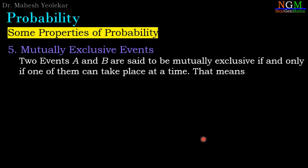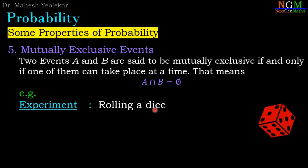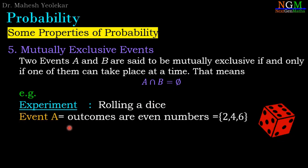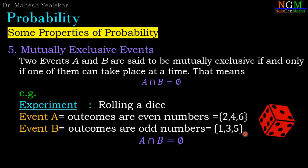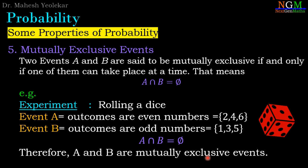Mutually exclusive events: two events A and B are said to be mutually exclusive if and only if one of them can take place at a time. That means A∩B equals the empty set — both events cannot occur at the same time; if one occurs, the second cannot occur. Example: in rolling a dice, event A gives even numbers {2, 4, 6} and event B gives odd numbers {1, 3, 5}. Therefore A∩B equals empty, so A and B are mutually exclusive events.